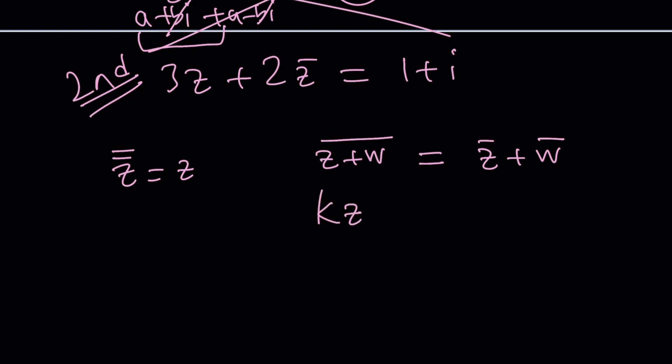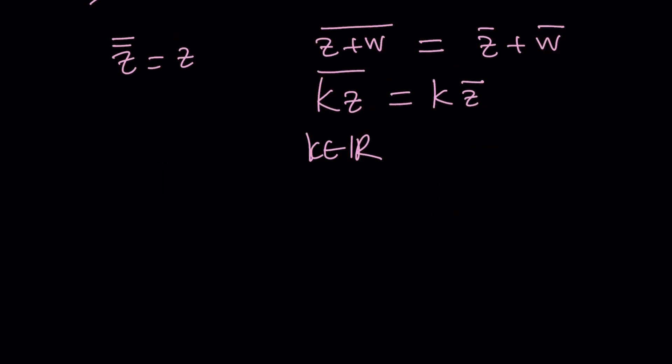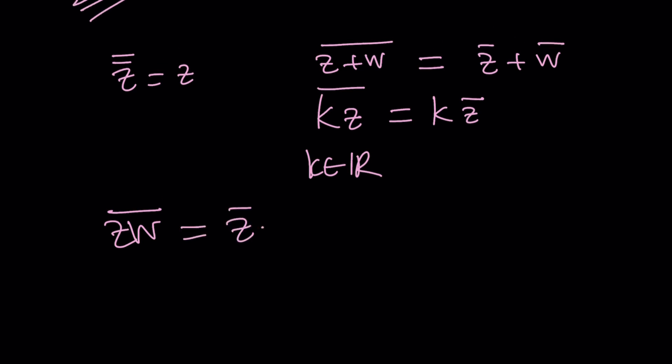If you have a number like kz, where k is a constant, a real constant, you get k times z̄. You could also write this as the conjugate of k, but since k is real, its conjugate is going to be itself. This is a more general form. If you have z times w, the product of two complex numbers, if you conjugate that, you get the product of the two conjugates.